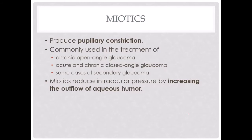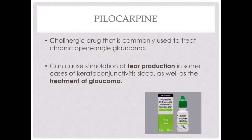Pilocarpine is a cholinergic drug — not an adrenergic drug — that is also used to treat chronic open angle glaucoma. It also stimulates tear production, so we can use it in some cases of keratoconjunctivitis sicca.